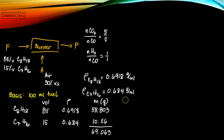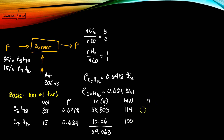In order to solve for the number of moles, let's write the molar mass first. The molar mass of C8H18 is 114 g/g-mol, and C7H16 is 100 g/g-mol. Therefore, the number of moles of C8H18 is 58.803 divided by 114, which is 0.5158 g-mol. The number of moles of C7H16 is 10.26 divided by 100, which is 0.1026 g-mol.